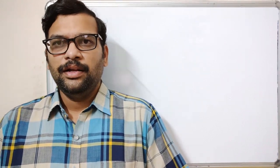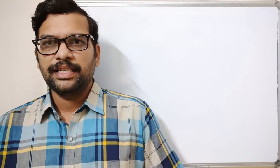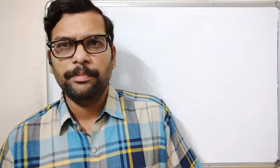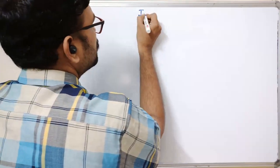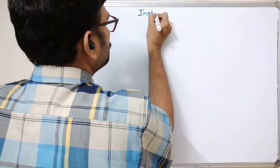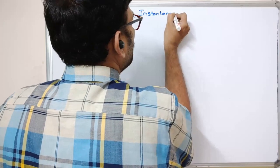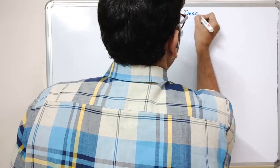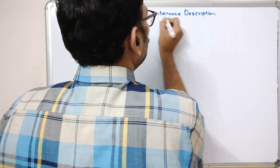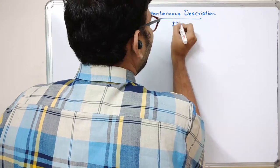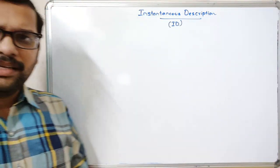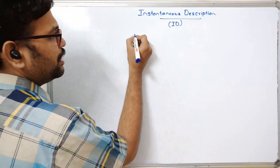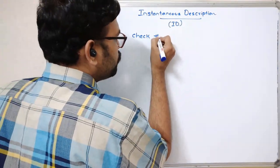Hello friends, welcome back to our channel. In today's session we'll discuss one more topic in pushdown automata, that is Instantaneous Description, which is called ID. It is also called an informal notation of PDA — Instantaneous Description, which we call ID.